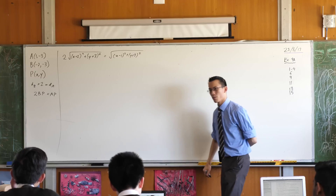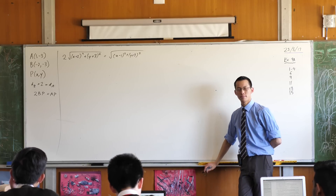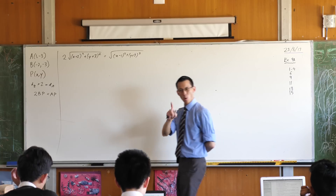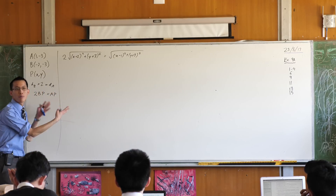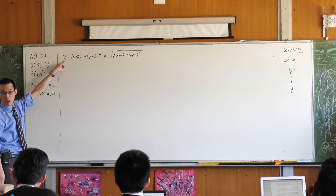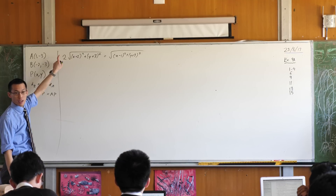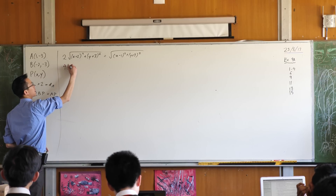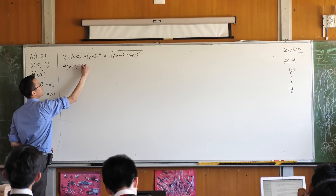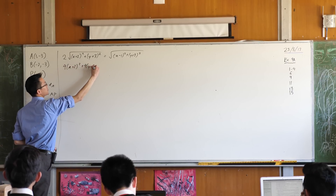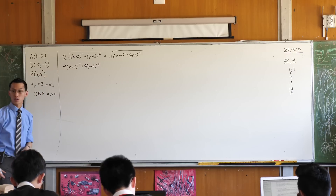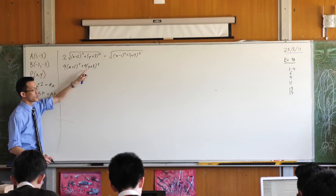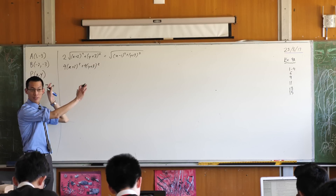All I've done is taken the geometric definition and put algebra underneath it. When you see these square roots, what is your instinct? Square and get rid of them. Now we will do exactly that, but just be cautious — there's not just square roots on both sides. This coefficient 2 is also hanging around, and if you square everything, you're going to square him as well. So on the left-hand side, I'm going to get 4 times the bracket.